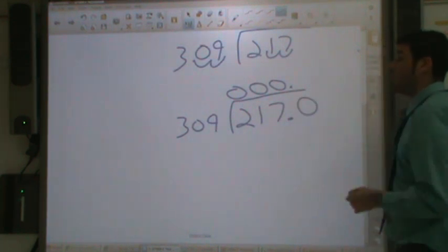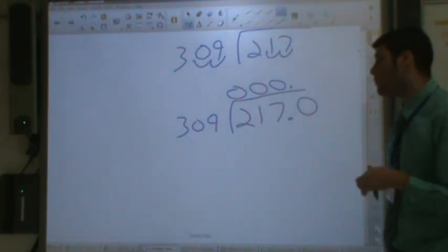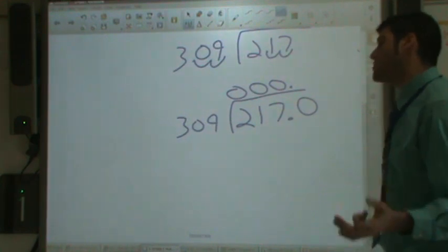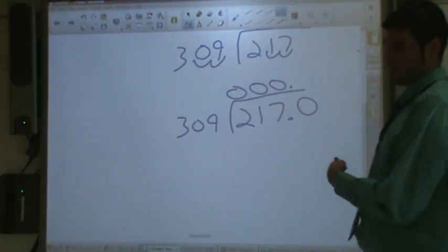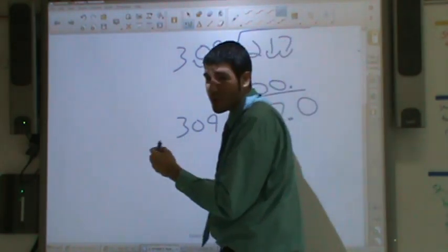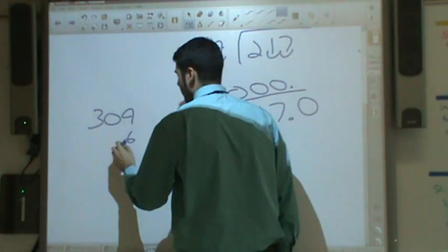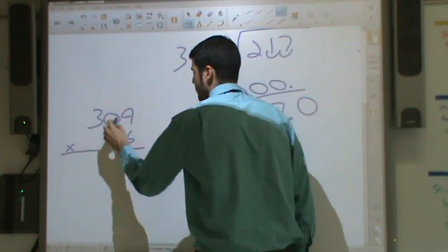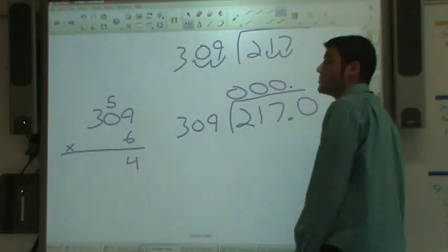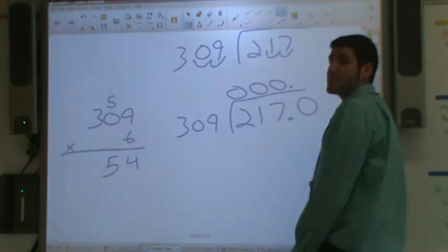Now we have to figure out, how many times does 309 go into 2170? Let's do some mental math over here. Just looking at it, I'm going to try six. I have no idea. I haven't done this problem before. Nine times six is 54, put the four down there, carry it. Six times zero is zero, plus five is five. And then six times three is 18.